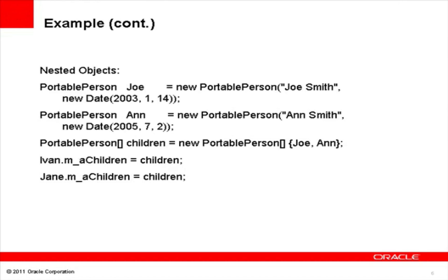Here we have Joe and Ann, who are children of Ivan and Jane. This is an example of nested objects in a uniform array. During serialization, rather than repeating Joe and Ann multiple times, both Ivan and Jane's children would just contain Joe and Ann's object reference IDs in PuffStream.